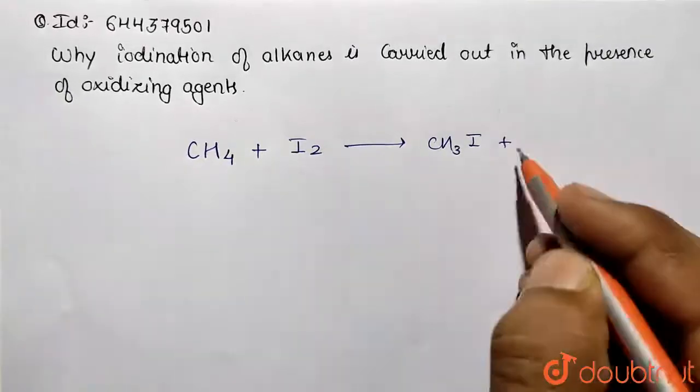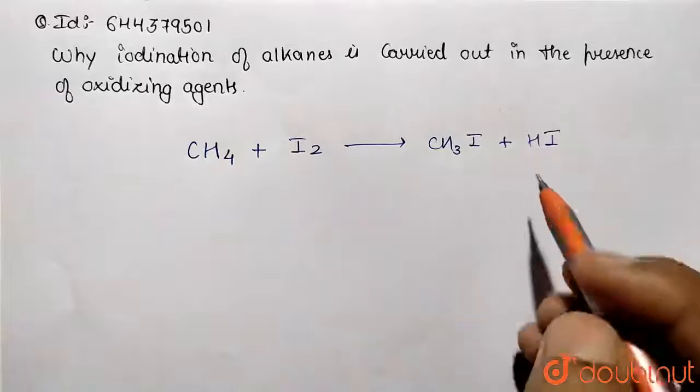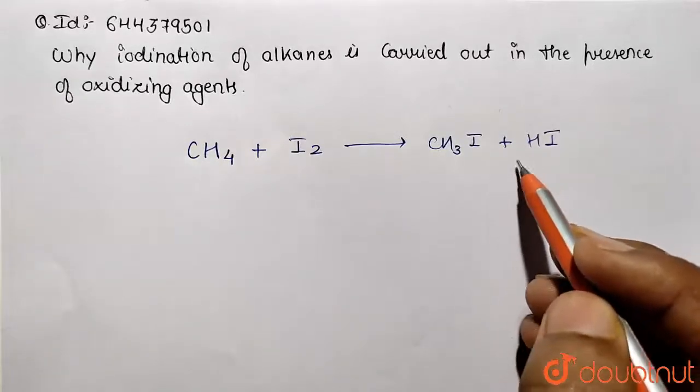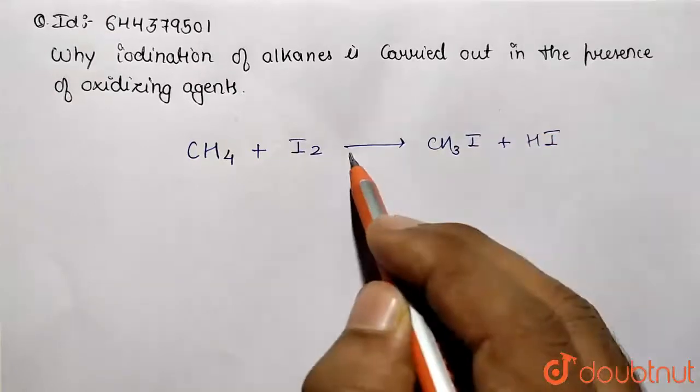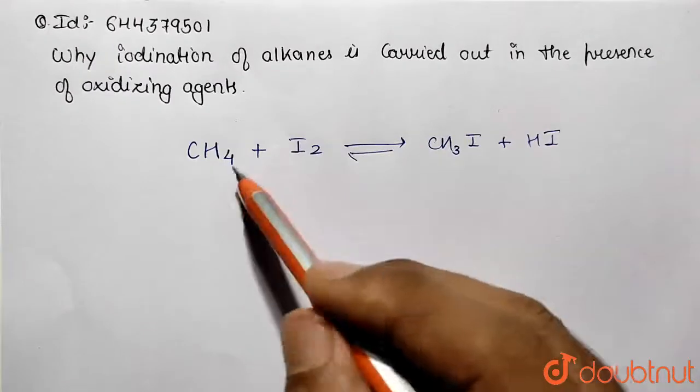Now what happens if any oxidizing agent is not present over here? This HI is again going to decompose this and it will be reversed back. So what happens is we are going to get the initial set of reactants back. So that's why oxidizing agents are used.